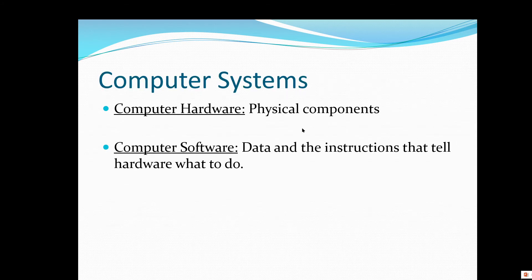First thing: computer systems. We have computer hardware and computer software. The computer hardware are the physical components of the system — the actual hard drive, monitor, keyboard, mouse, CPU — all physical components. The computer hardware really doesn't do much of anything until it has instructions telling it what to do.